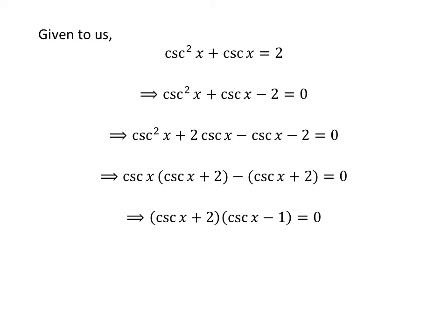Taking out the common factor (cosecant of x plus 2), we get: (cosecant of x plus 2) times (cosecant of x minus 1) is equal to 0. This gives either cosecant of x plus 2 is equal to 0, or cosecant of x minus 1 is equal to 0.